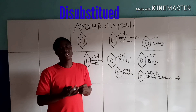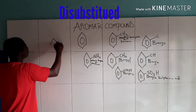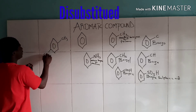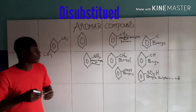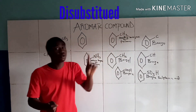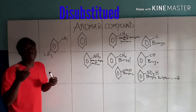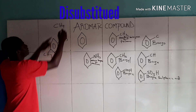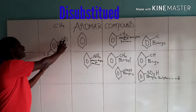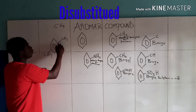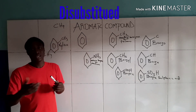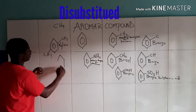Now talking about disubstituted benzene derivatives, we see benzene attached to two CH3 groups. The CH3 group is called methyl, which is an alkyl group. An alkyl group is a relative of an alkane that has lost one hydrogen — methane loses one hydrogen to give methyl. When two methyl groups are on a benzene ring, the compound is called xylene, a disubstituted benzene derivative.